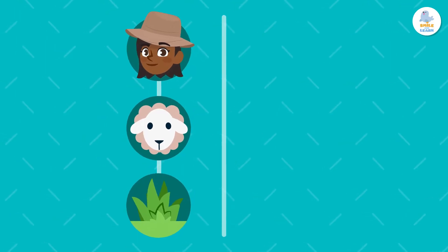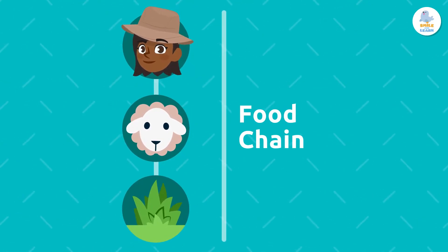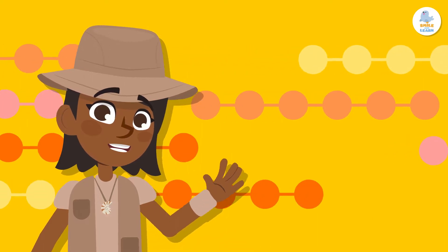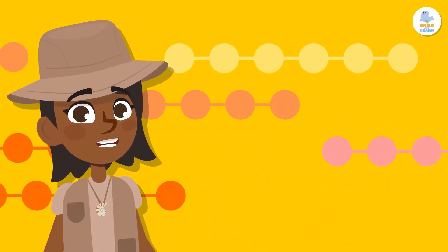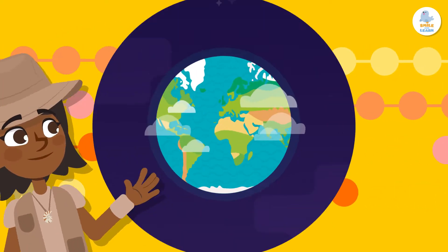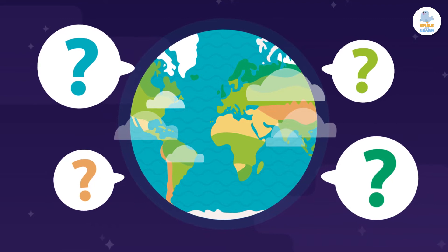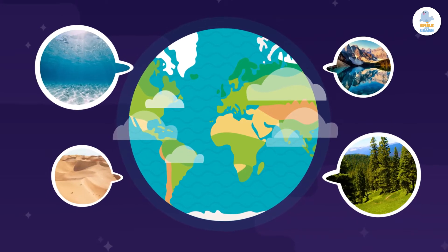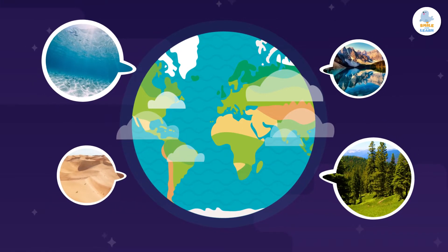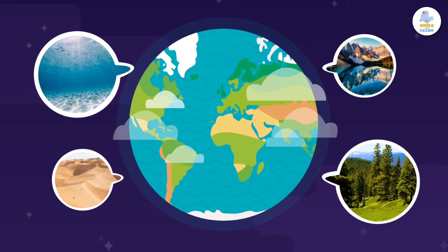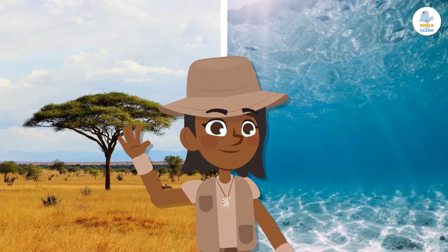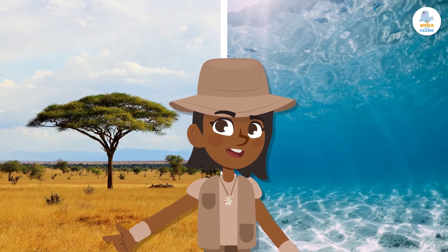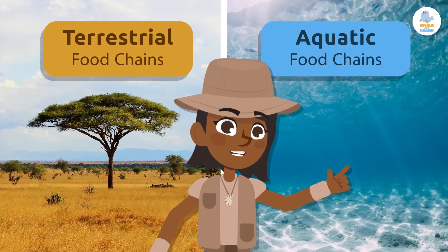The way energy passes from one living thing to another is called a food chain. One way to classify food chains is by the habitats where the living beings in the chain get their food. Let's think about our planet and all the habitats on Earth — how many habitats can you think of? There are two general types of natural habitats: terrestrial and aquatic. The living things in these habitats form many food chains, so we can classify food chains in two ways: terrestrial food chains and aquatic food chains.